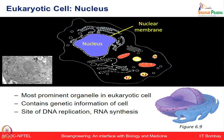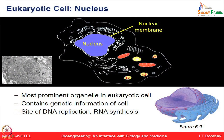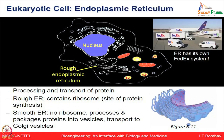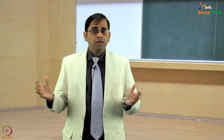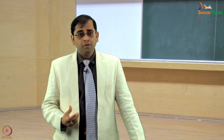The nucleus is the most prominent organelle in the eukaryotic cell. It contains the genetic information required for the cell and provides a site for DNA replication and RNA synthesis. The endoplasmic reticulum is involved in the processing and transport of proteins — it is like a FedEx system. Just as letters and parcels are moved via vans and aeroplanes, the body's endoplasmic reticulum is similarly involved in moving materials.